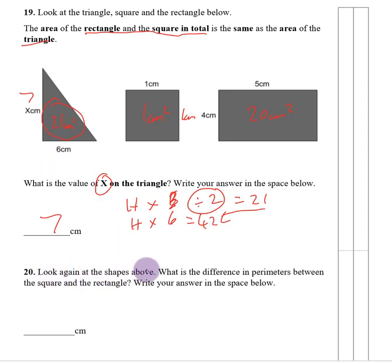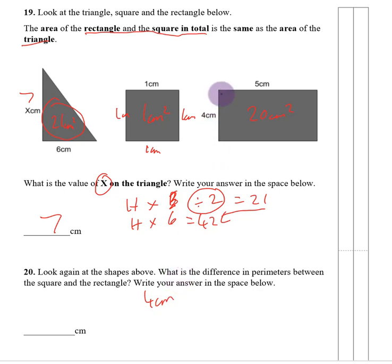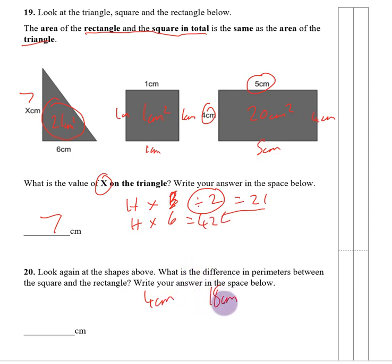Number twenty. What is the difference in perimeters between the square and the rectangle? Perimeter is the distance all the way around. The square has all sides of 1, so perimeter is 4 cm. The rectangle has sides of 5 and 4, so 5+4 is 9, doubled gives 18 cm. The difference between 18 and 4 is 14.